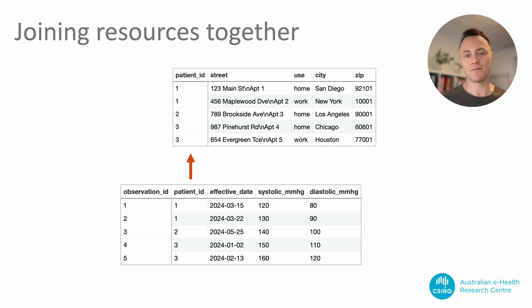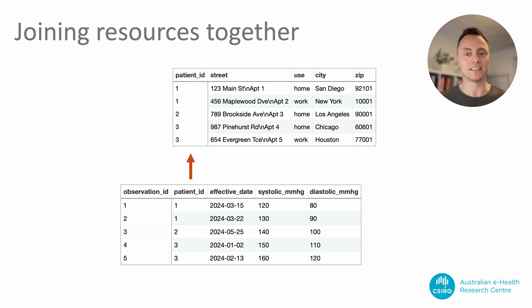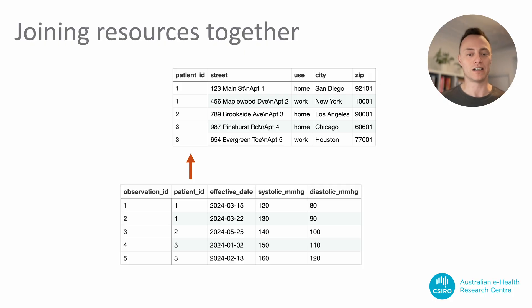Here is an example of two views. One is a patient view and the other is an observation view containing blood pressure measurements. The patient view has a column containing the result of the getResourceKey function, and the observation view has a column defined with the getReferenceKey function. A simple join can bring these two tables together to form a harmonised view of both patient details and their blood pressure observations.